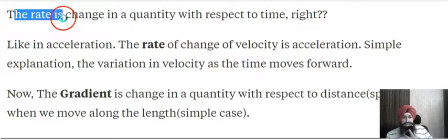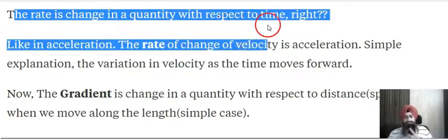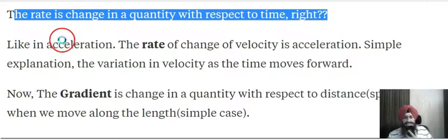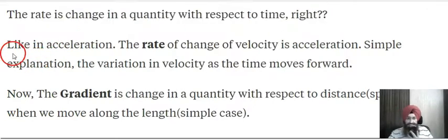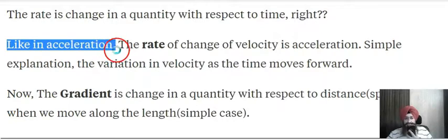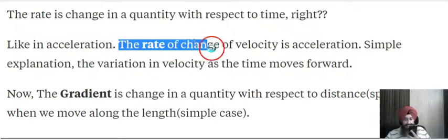The rate of change means how a quantity changes with respect to time — that is called the rate of change. For example, acceleration is the rate of change of velocity, meaning how velocity changes with respect to time.